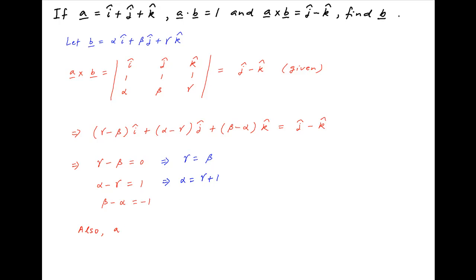Now, we are also given that the dot product of vectors a and b is equal to 1, which implies that i plus j plus k dot alpha i plus beta j plus gamma k is equal to 1.